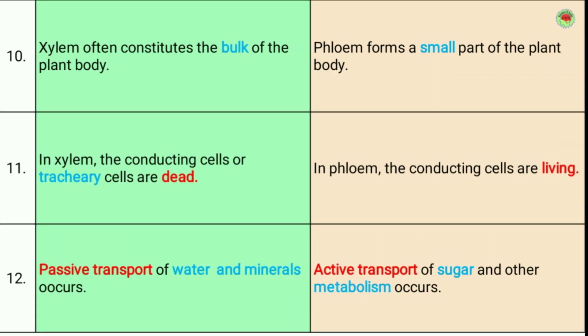Tenth, xylem often constitutes the bulk of the plant body, while phloem forms only a small part of the plant — approximately 70 percent of the plant is made up of xylem and the remaining 30 percent is occupied by phloem.